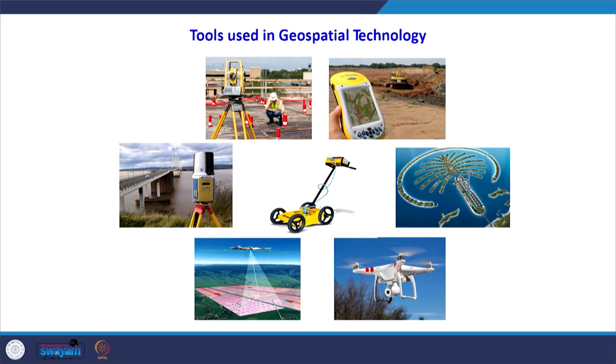The bottom left figure shows lidar technology mounted on an aircraft — an airborne system. When the area is large, such as a watershed or along a river in gorges where it is not possible to physically visit the ground, we carry out airborne survey. We mount the lidar device on an aircraft, and it collects point cloud data of a very large number of points in the shortest possible time. Here also we get x, y, z coordinates — all these devices are providing us x, y, and z coordinates of ground features and objects.